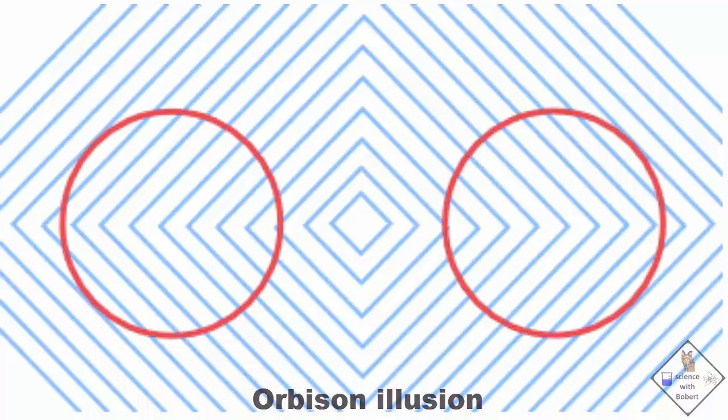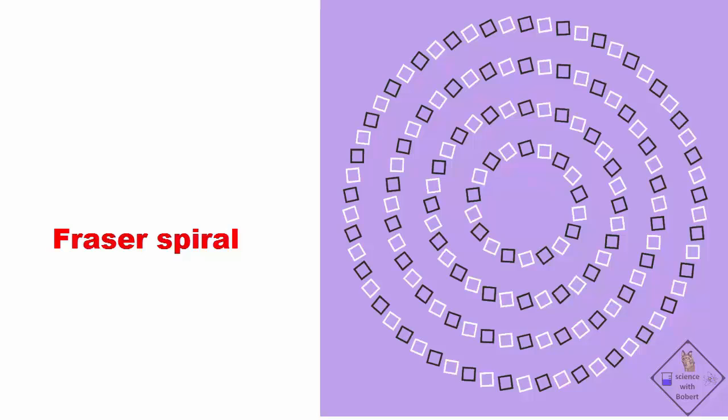This is a Fraser spiral illusion. Your brain makes you believe it is a spiral, however it is not. Just circles. Follow the fake spiral with your finger to prove it to yourself.